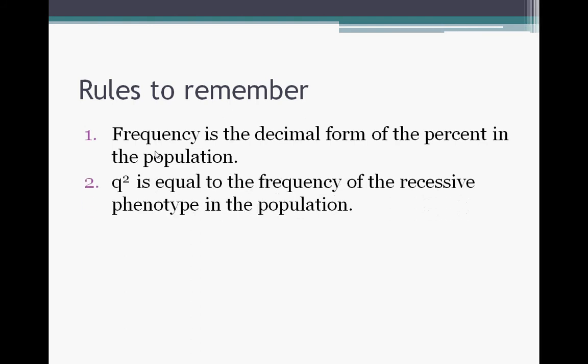The second thing to remember is that, or just to be sure that you remember, q² is equal to the frequency of the recessive phenotype in the population. A lot of times in the word problems, they'll tell you what percentage is recessive. And when they tell you what percentage is recessive, then all you've got to do is give that to the decimal form and you've got the frequency and you already have q² solved. And if you can find q², then you can find q. And if you can find q, you can figure out what p is because the third and arguably the most important thing to remember is that p + q is always going to equal 1.